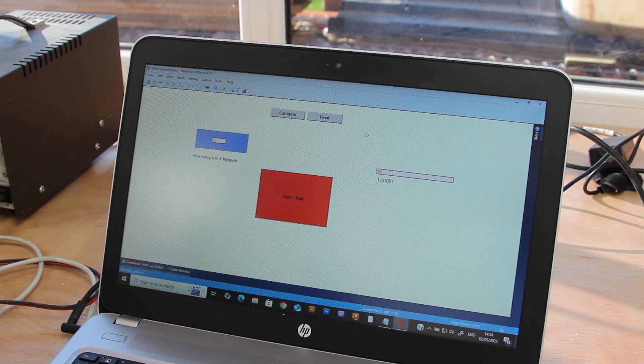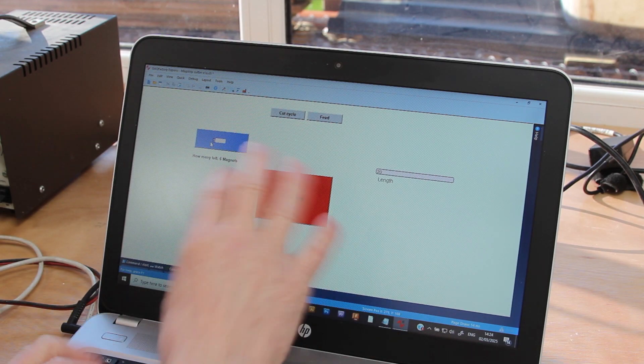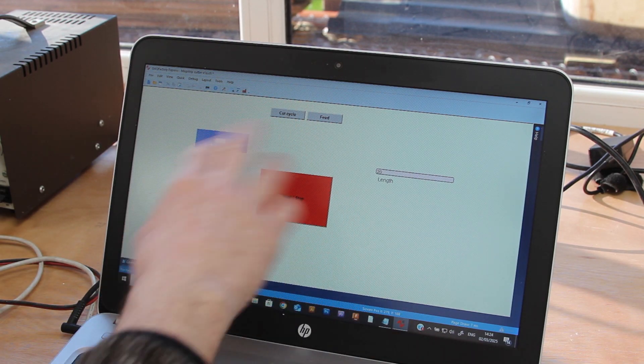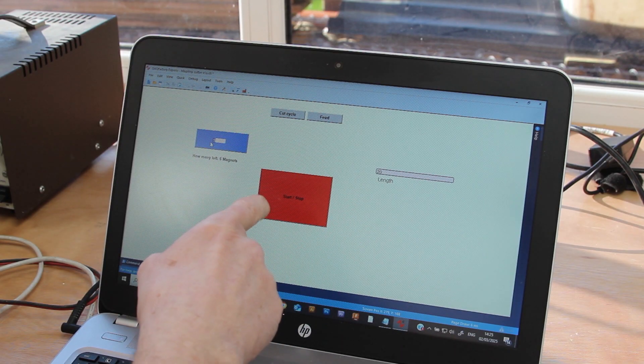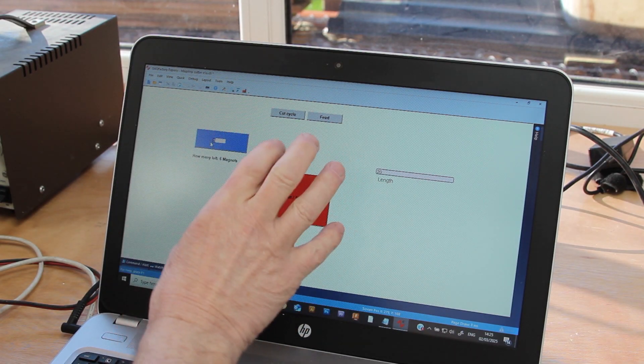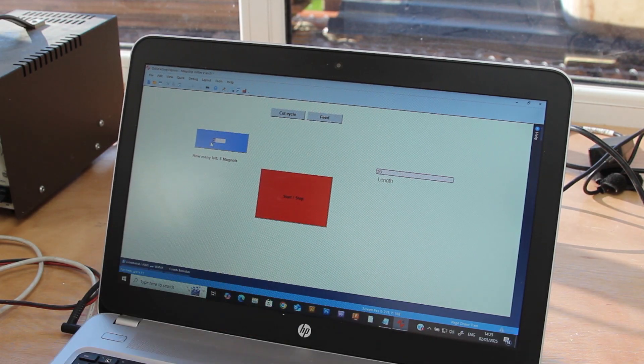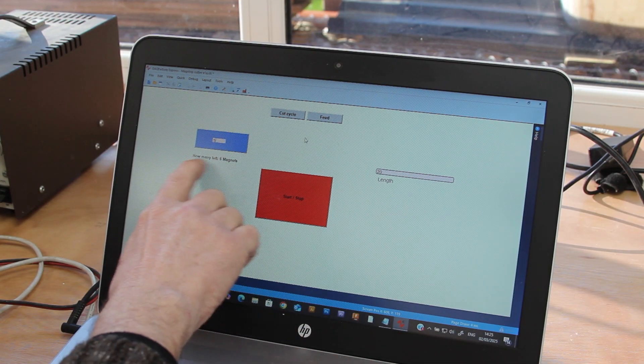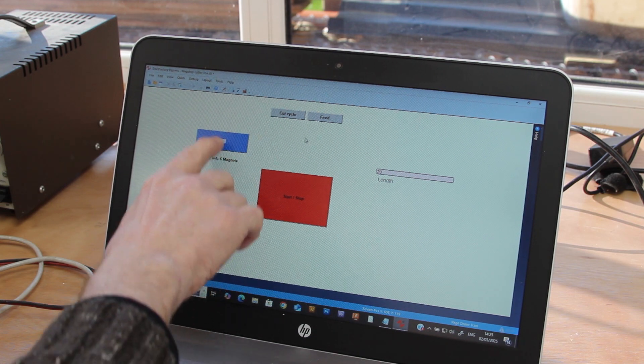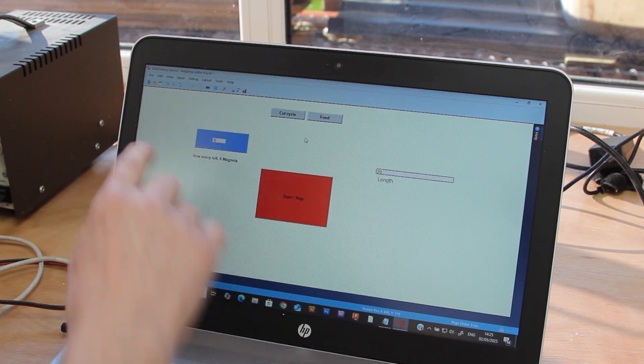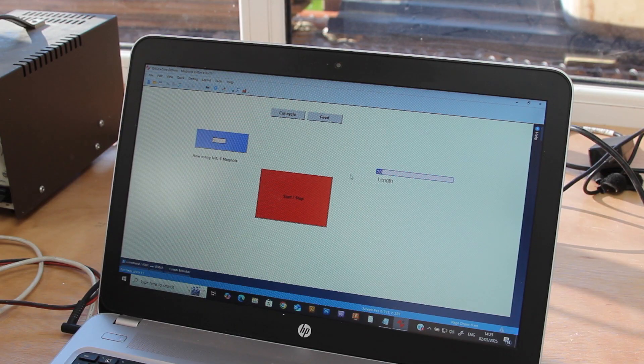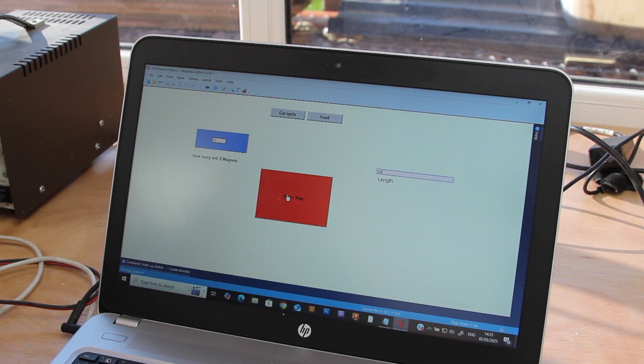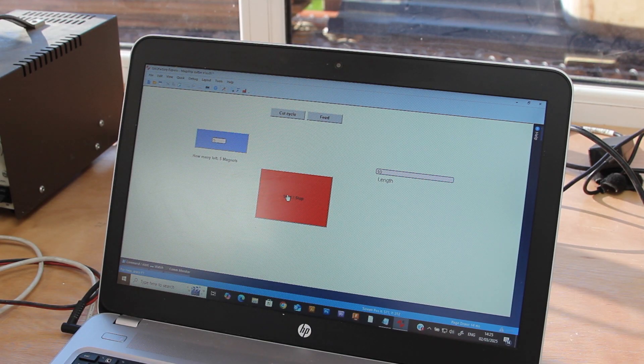It connects by USB to the actual machine. Let me just show you, it's ever so simple to use. In the Express version you're only allowed a few items on your page and you're only allowed two screens, two pages. So we put five magnets in and it tells us there's six to go. There's an anomaly with that, I never did work out how to sort that out. Then just put in a length, so let's put in a length of 10, and then all you've got to do is hit the start button and off it goes.